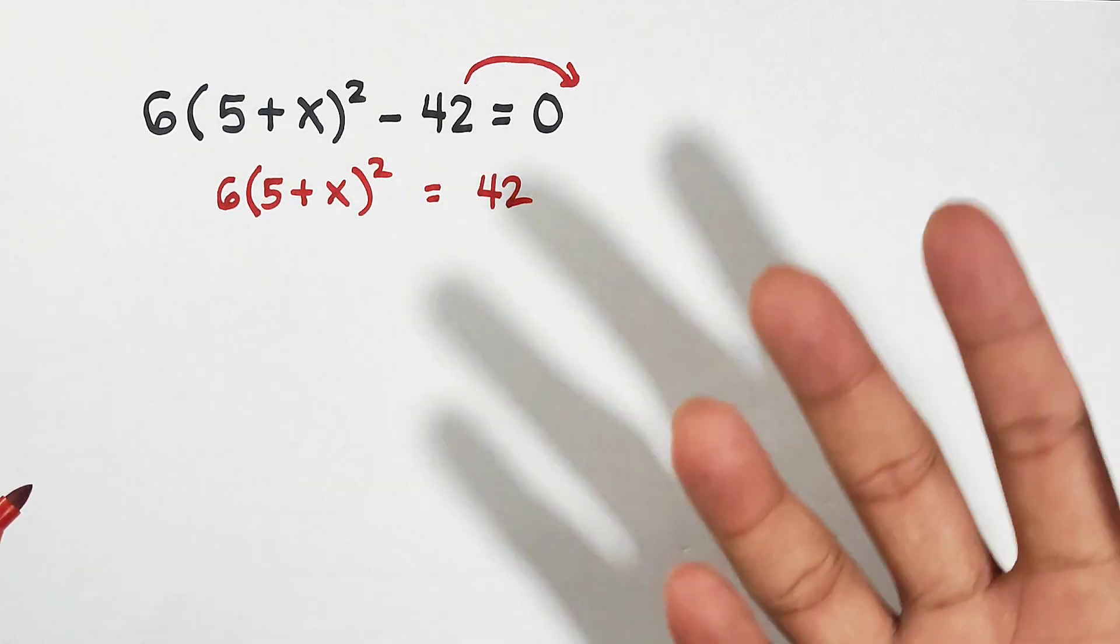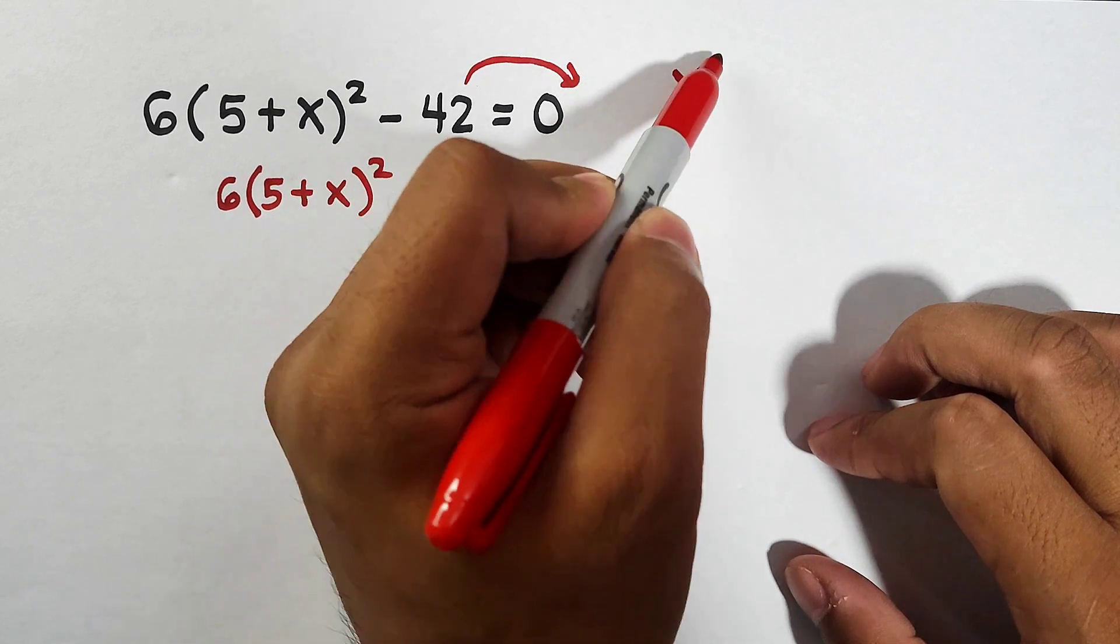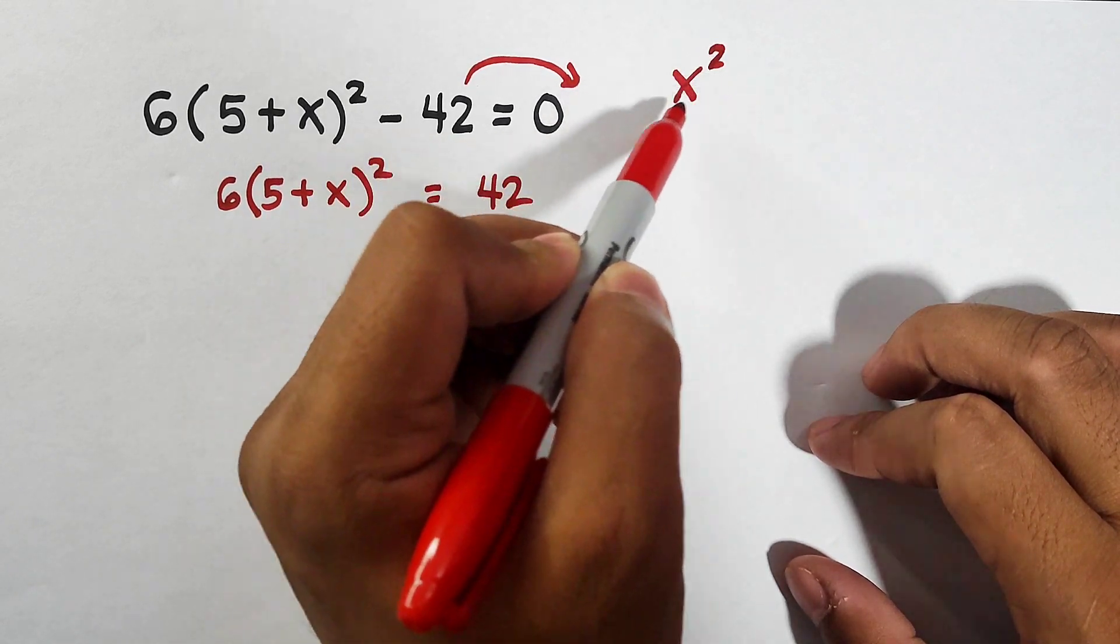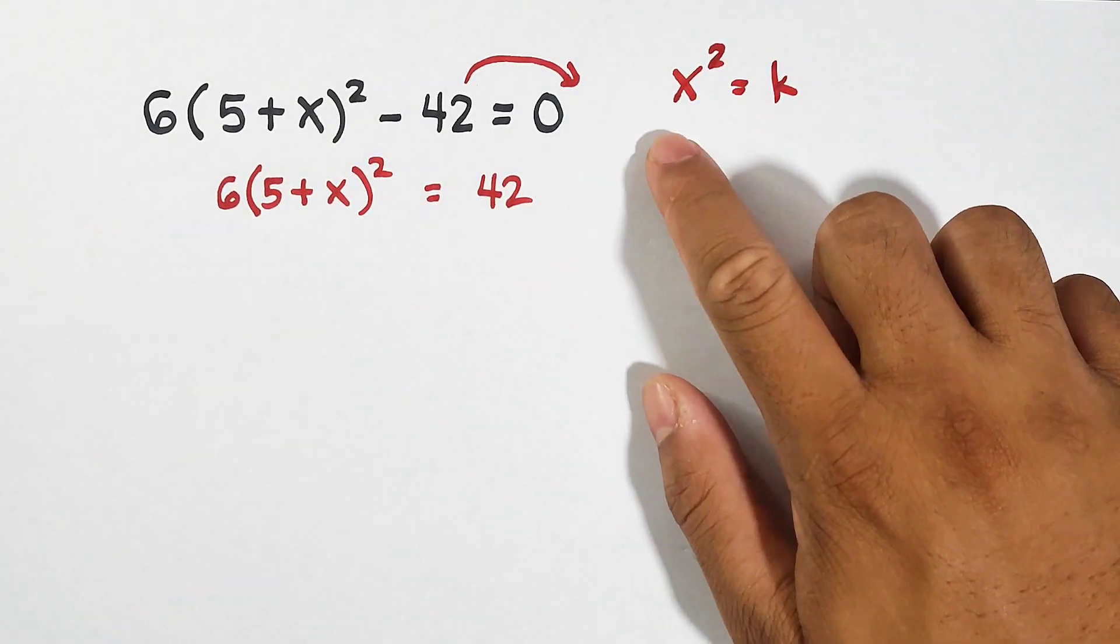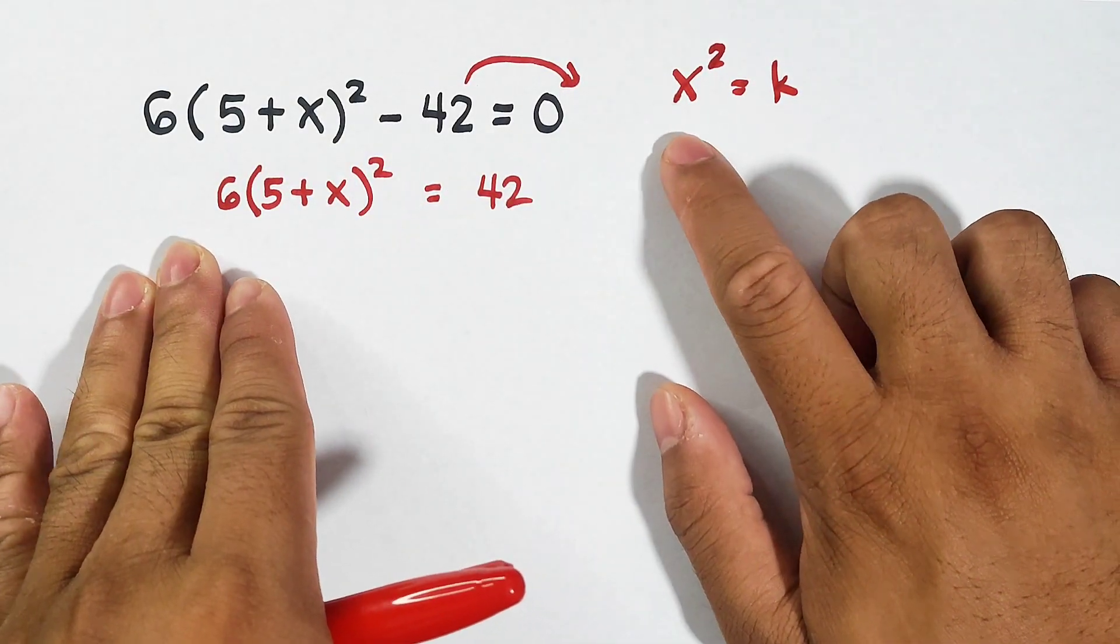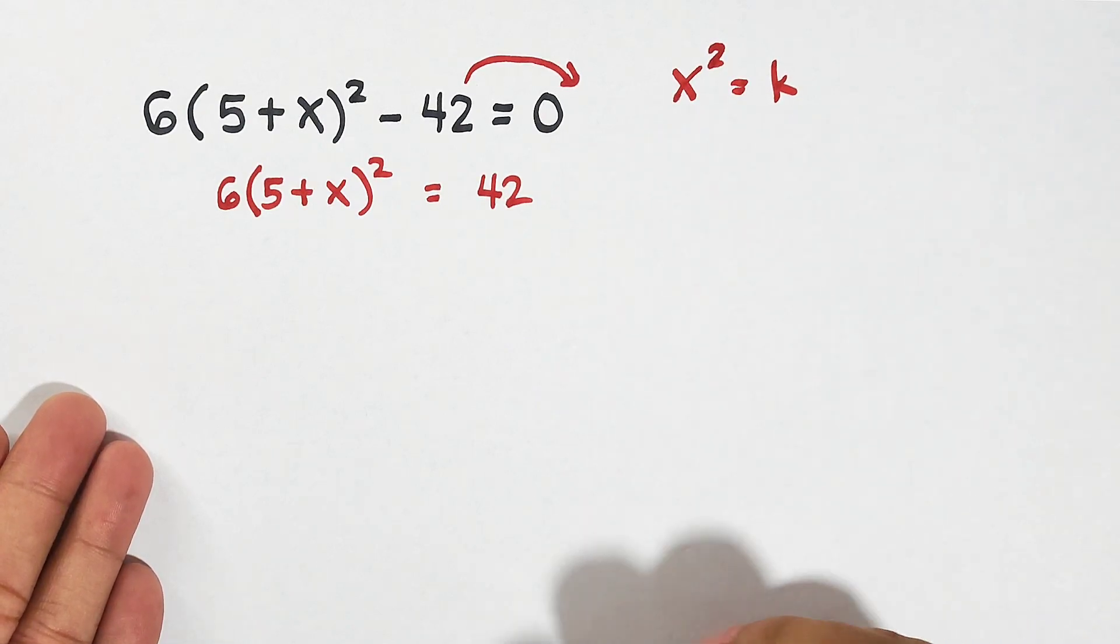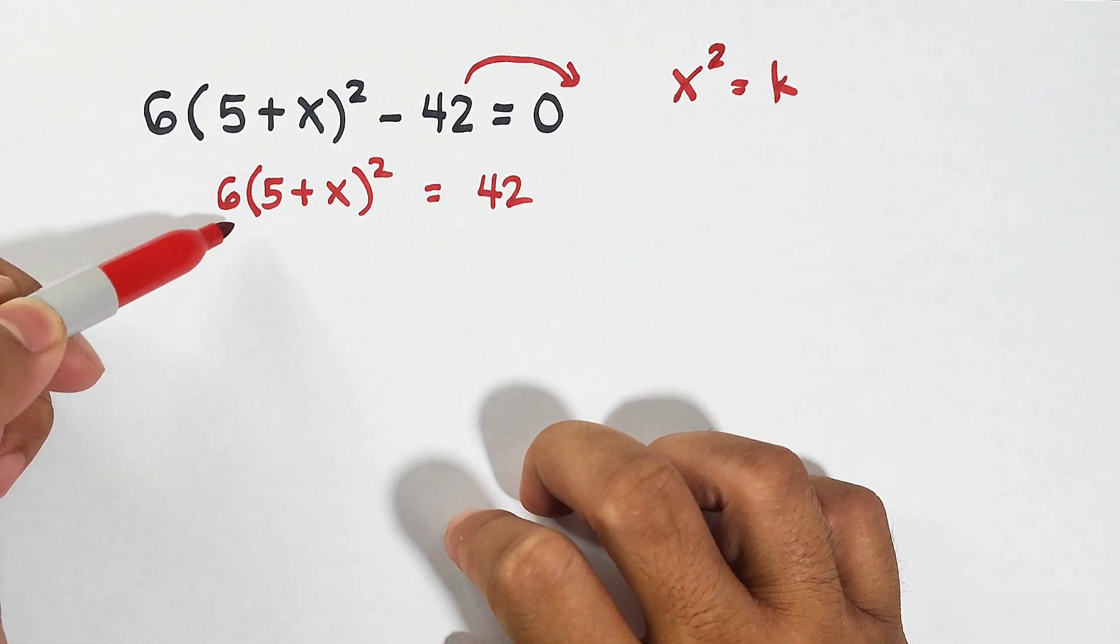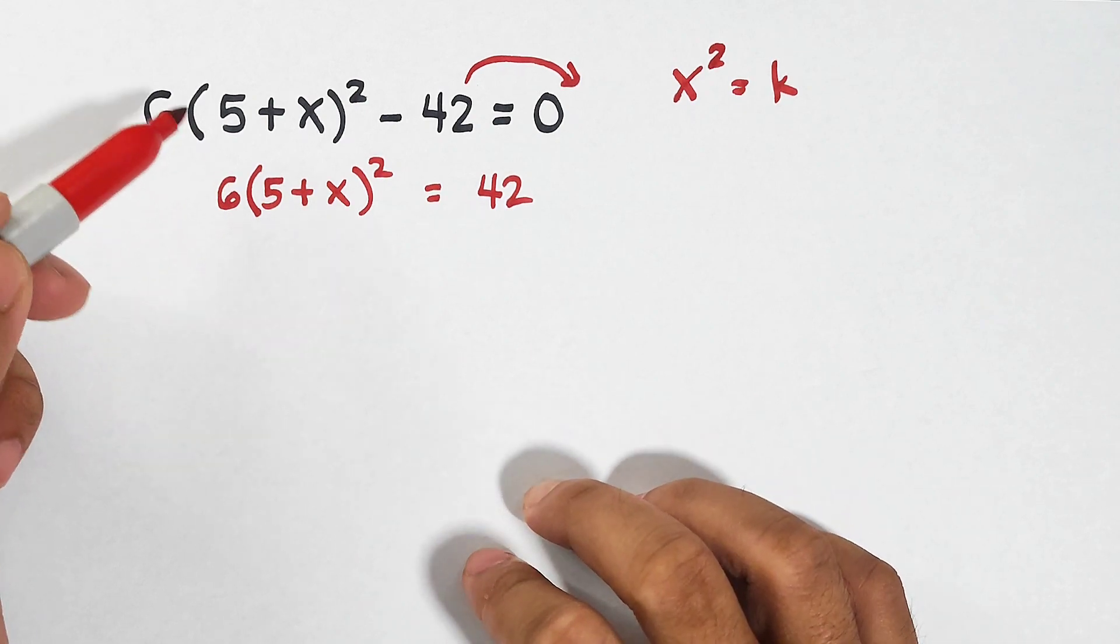So what will happen, our new equation is 6 times the quantity of 5 plus x squared is equal to 42. Then after that, our target here is to follow this pattern. We need to make it looks like x squared is equal to k. The quadratic term should be on the left side and then constant on the other side. So what's next here is that we need to eliminate positive 6.